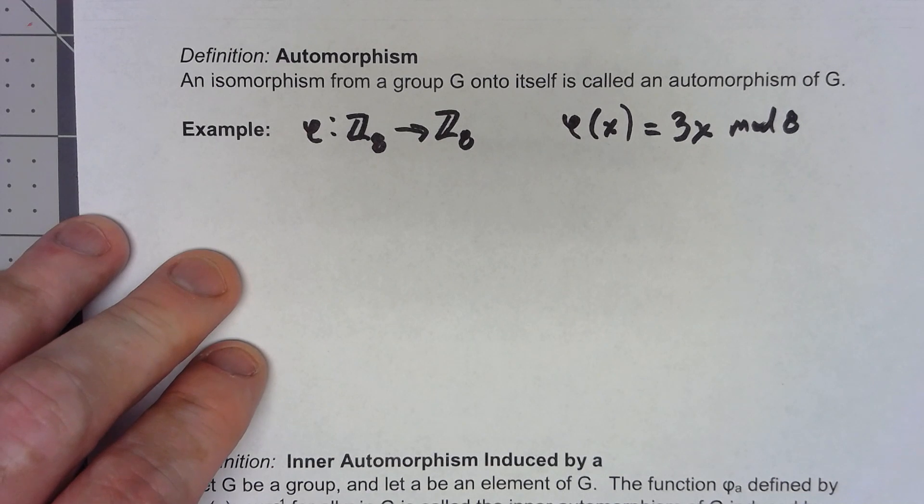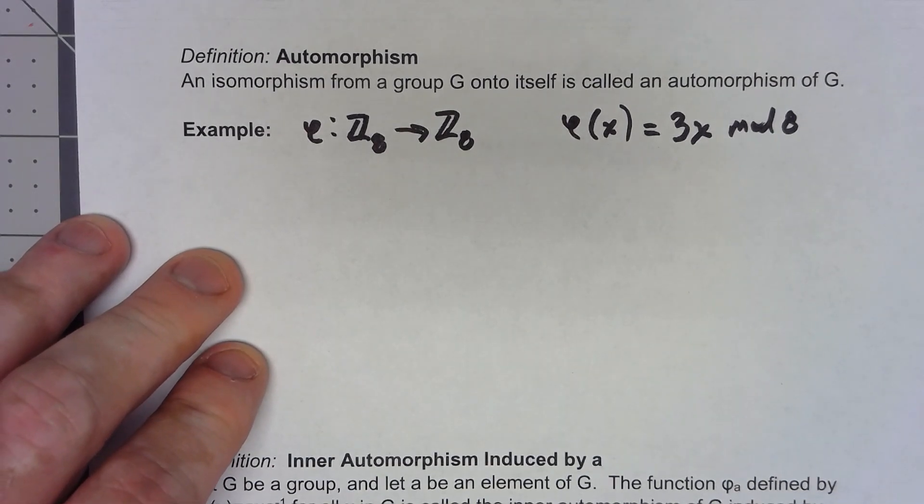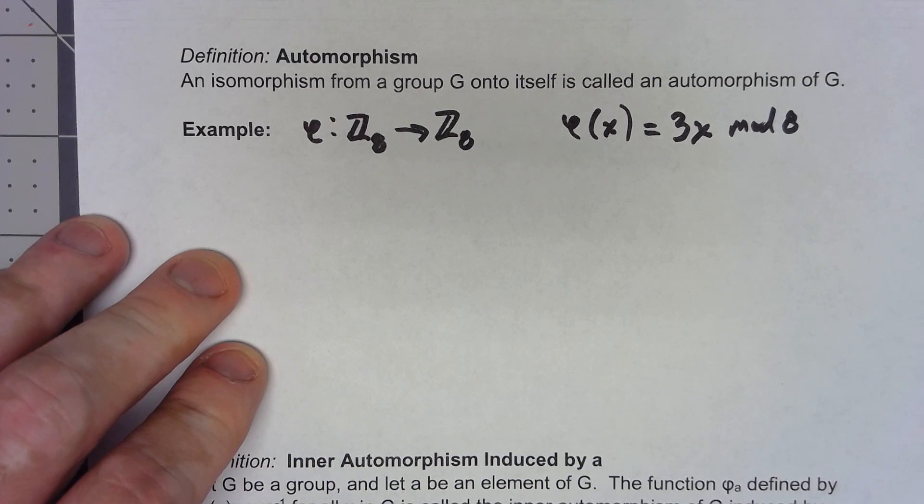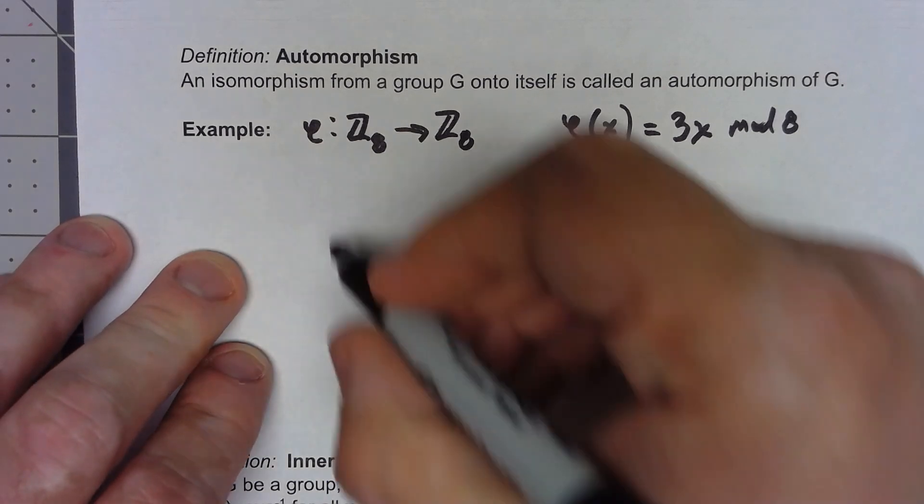Now there are ways to show that this is one-to-one and onto using the tricks we've shown in other videos this week, but honestly there's only eight elements. It's probably just as easy to go through and figure out what each one is.